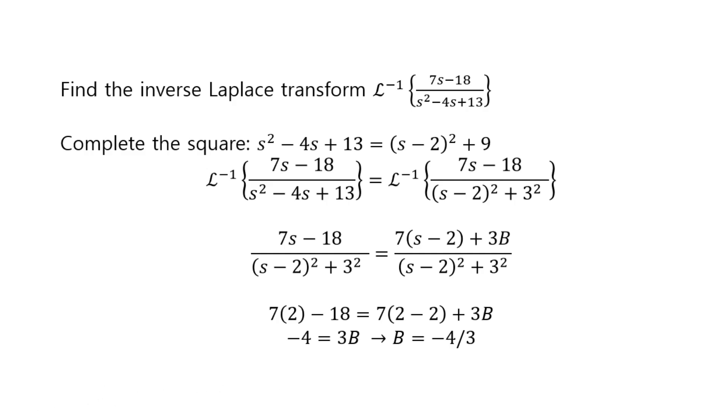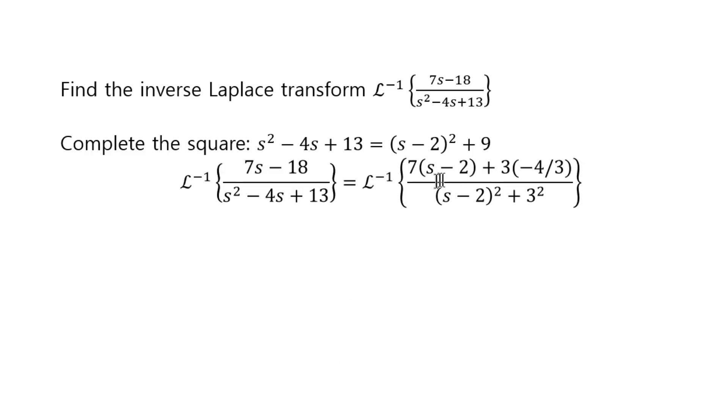So you're now very close. All you have to do now is to replace this by this one with b being negative 4 thirds, just like that. And then because this first part is e to the at cosine bt type, and the second part, 3 over s minus 2 squared plus 3 squared, is of this type, now you can split this into two fractions with 7 taken out and negative 4 thirds taken out, and you end up with this as your final answer for the inverse Laplace transform. And that's all right. Thank you.